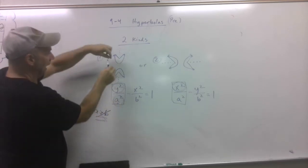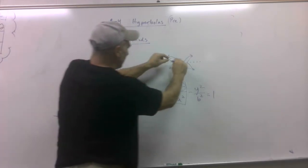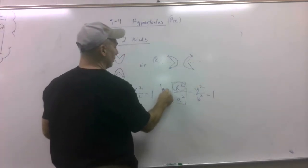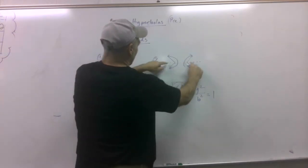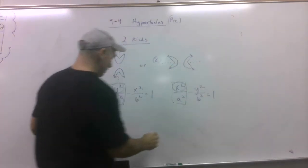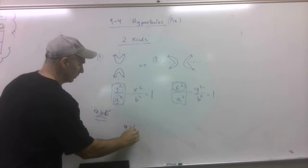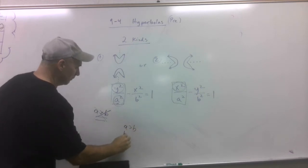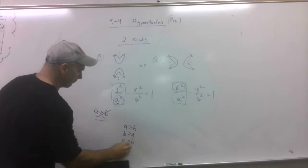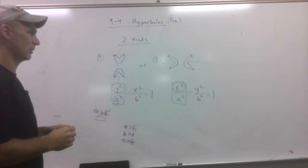Same thing here. A is always underneath the axis which the Pac-Men are chowing down dots. By the way, A can be bigger than B, B can be bigger than A, and A could even equal B. But you're never going to see that, I don't think.